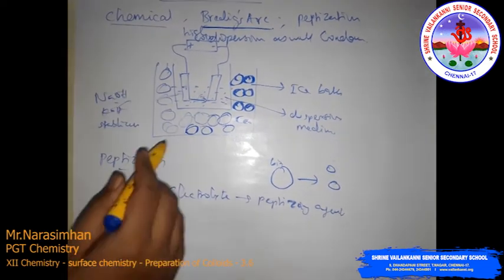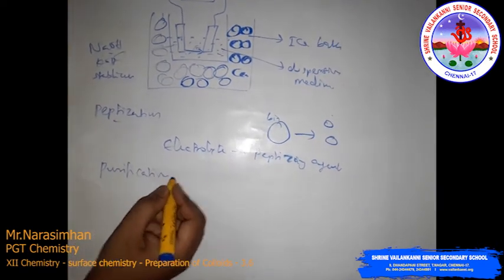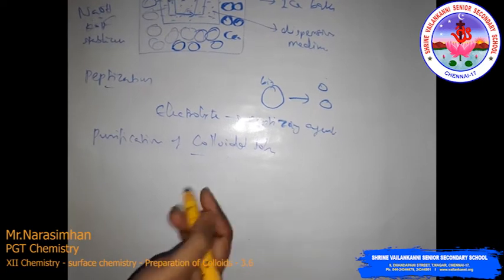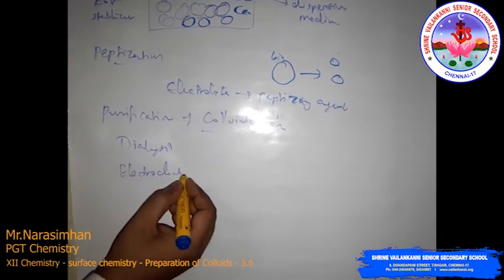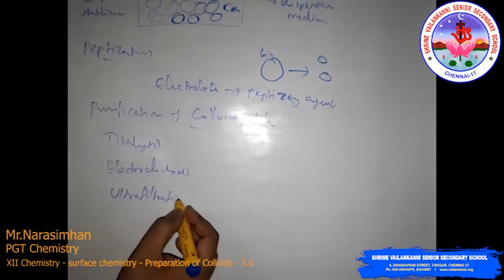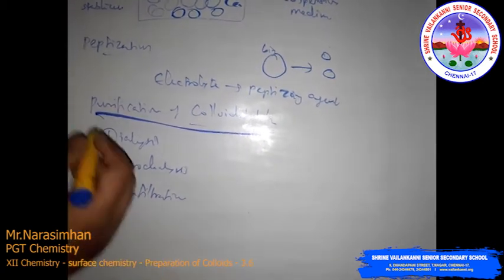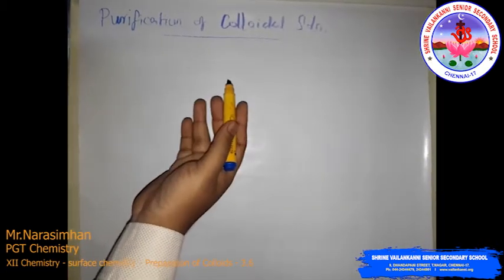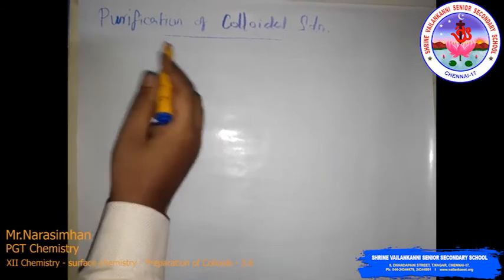Next is the purification of colloidal solution. The methods involved are: dialysis, electrodialysis, and ultrafiltration. Purification is the process of reducing the amount of impurities to a required minimum.